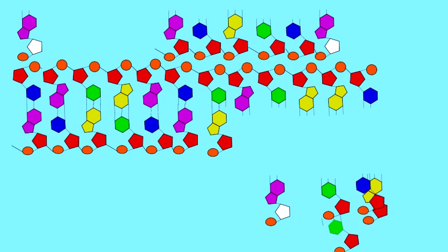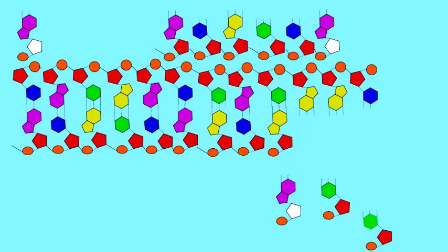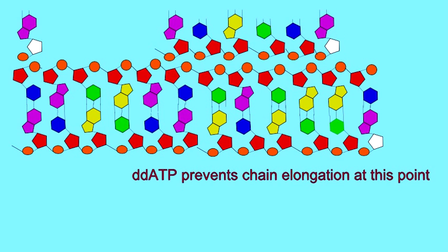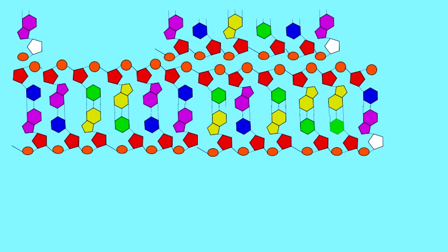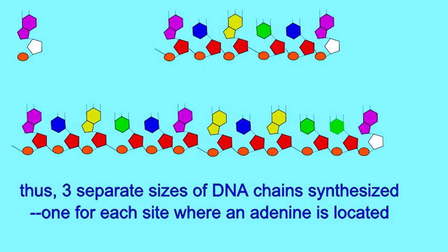As the chain elongates, and this is done multiple times, there will be some chains which are one nucleotide long, some chains which are six nucleotides long, and some chains which are twelve nucleotides long. This would allow you to map the sequence, recognizing that adenine is located at sites 1, 6, and 12 in this chain that is being mapped.